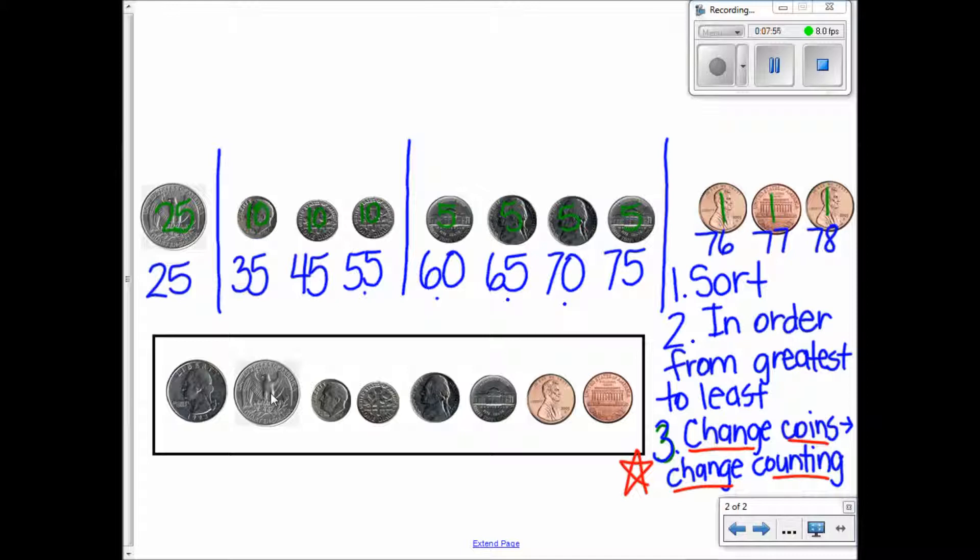I can write that two ways. I can write it with a cent symbol. A cent symbol looks like this - it is the letter C, because we spell cent with a C, with a line through it. So I can write 78¢. When I use a cent symbol, it comes at the end. Or I can write it with a dollar symbol. How many dollars do we have? Zero. Then I put the decimal and 78: $0.78. Now do I put a cent sign? No. Remember, a dollar sign and a cent sign never go together. You either use the cent sign or you use the dollar sign.